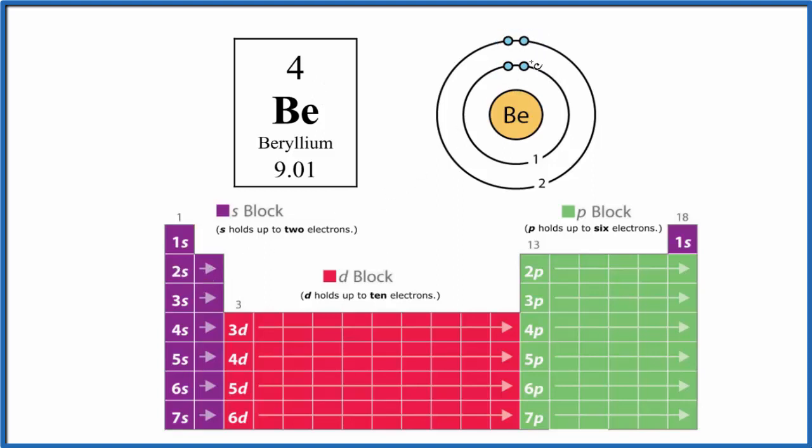So we put the two here, and this is the Bohr diagram for beryllium. This is the atomic structure of beryllium. We have two energy levels, and in the outer energy level, we have two electrons.